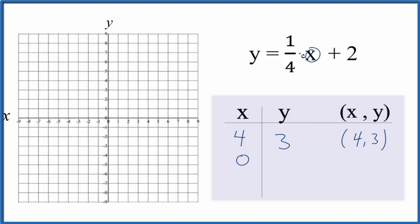Next, I'm gonna put 0 in for x. So if I have 0 for x, 1/4 times 0 that's just 0. 0 plus 2 that's 2, so I have (0, 2) as my point.